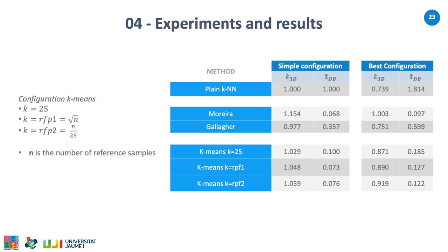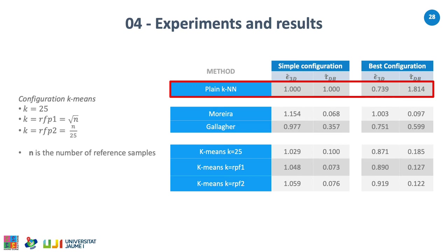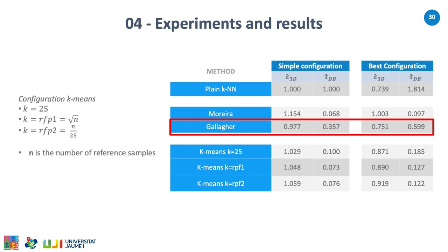In the next table, we can see the results of four models of Wi-Fi fingerprinting based on k-nearest neighbor using different methods and values of k. The first shows plain k-nearest neighbor without any optimization. The second, the Moreira method, applies a heuristic. The third is the Gallagher method. And the last is k-means with three values of k: k equal to 25, k equal to RFP1 (the square root of the number of reference samples), and k equal to RFP2 (the number of reference samples divided by 25). As expected, the k-nearest neighbor model reports the largest computational time. The Moreira model provides the lowest general computational cost in both configuration cases, but it provides the highest mean positioning error. In contrast, the Gallagher model has accuracy similar to the plain k-nearest neighbor model, but the time cost is reduced to a third at best.